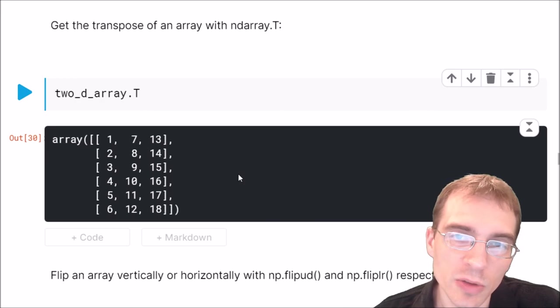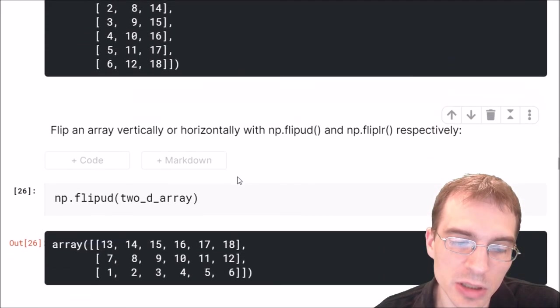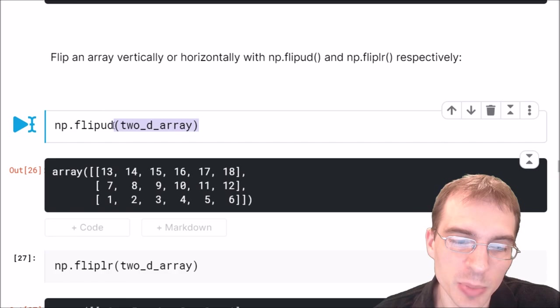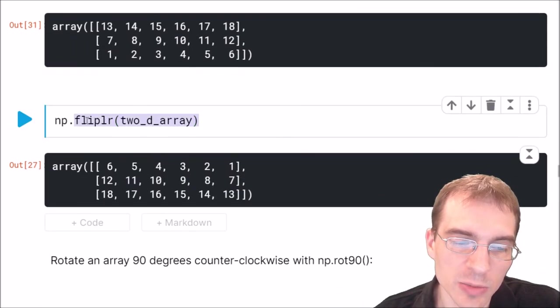You can also flip a 2D array horizontally or vertically using dot flip up down, UD, or dot flip LR, which stands for left right.